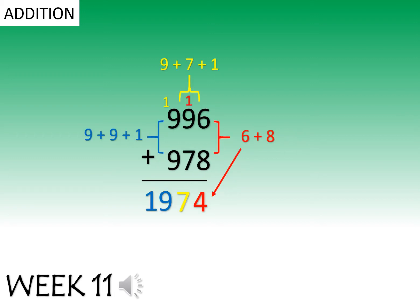Addition with 3 digits. 6 plus 8 is 14. Carry the 1. 9 plus 7 plus the 1 is 17. Carry the 1. 9 plus 9 plus 1 is 19.